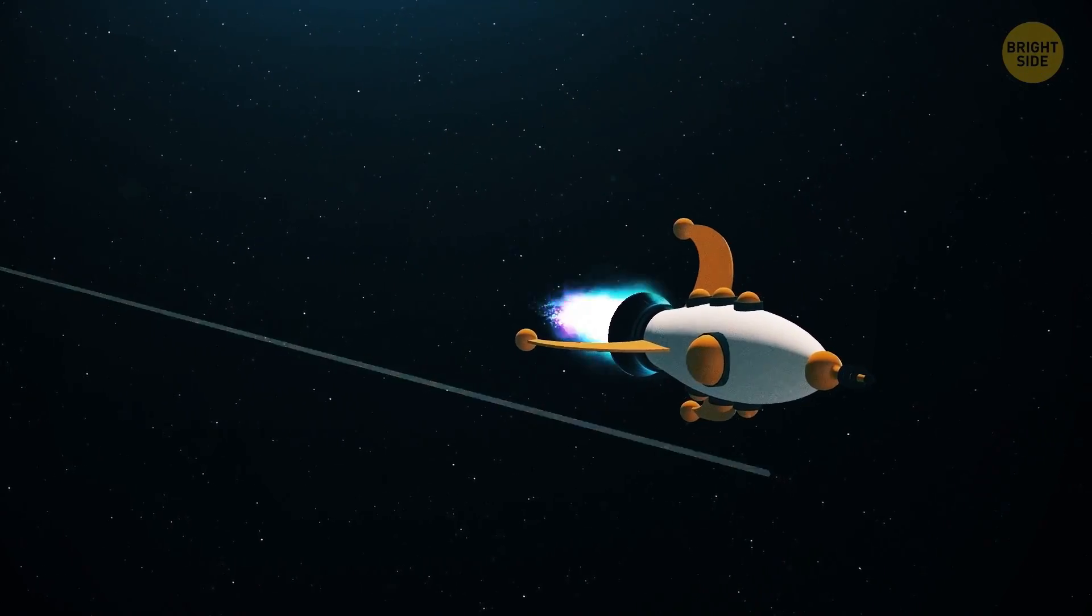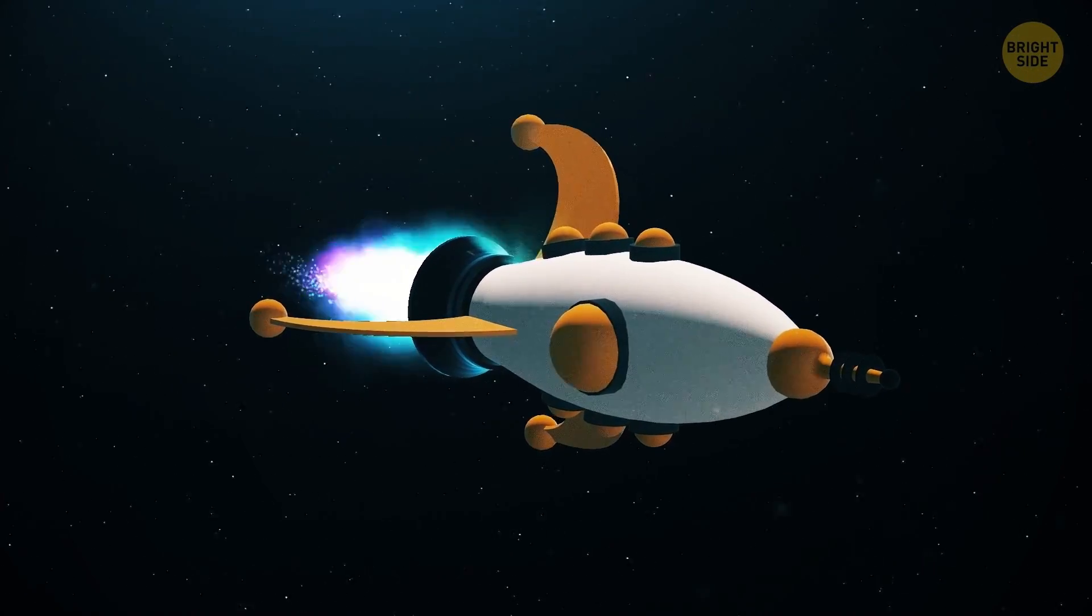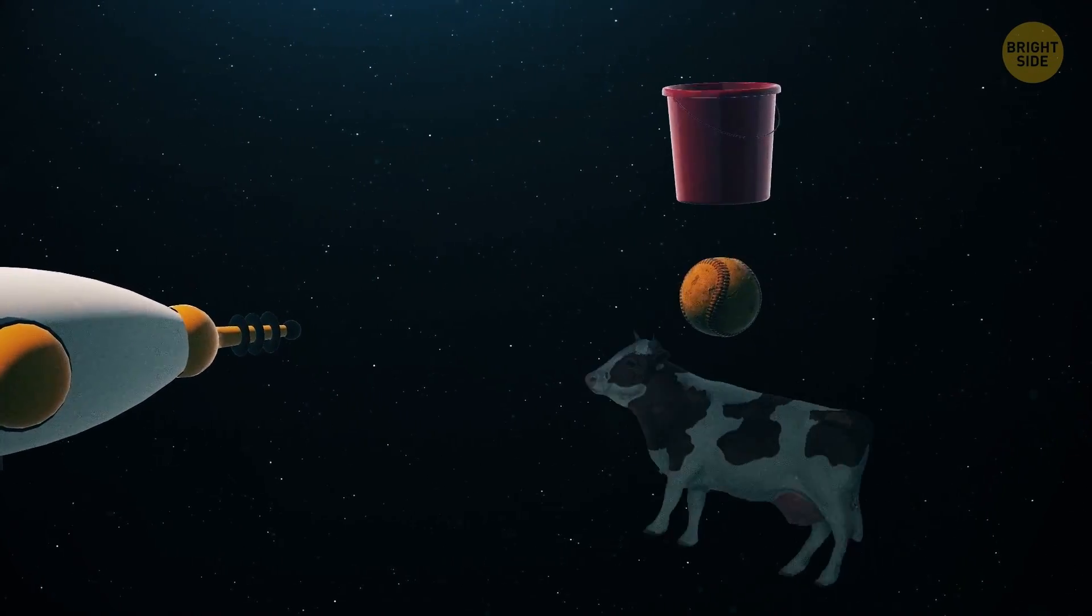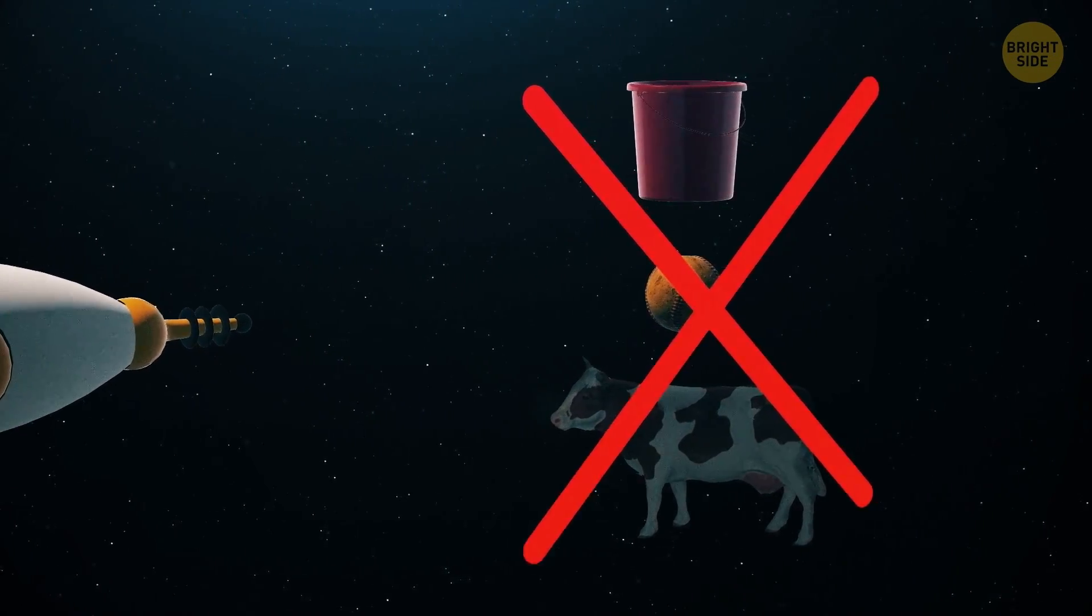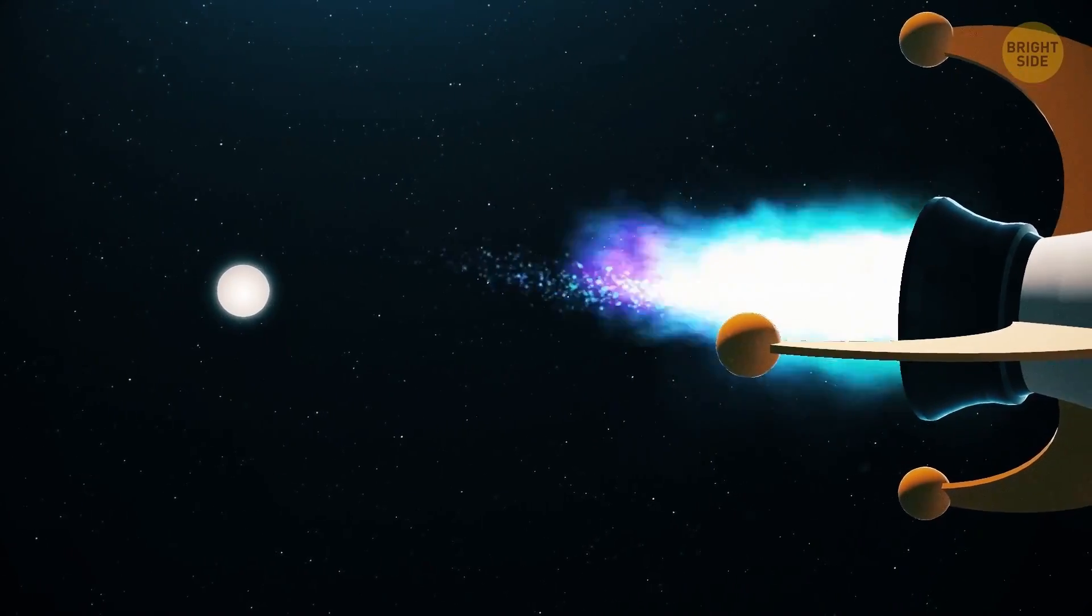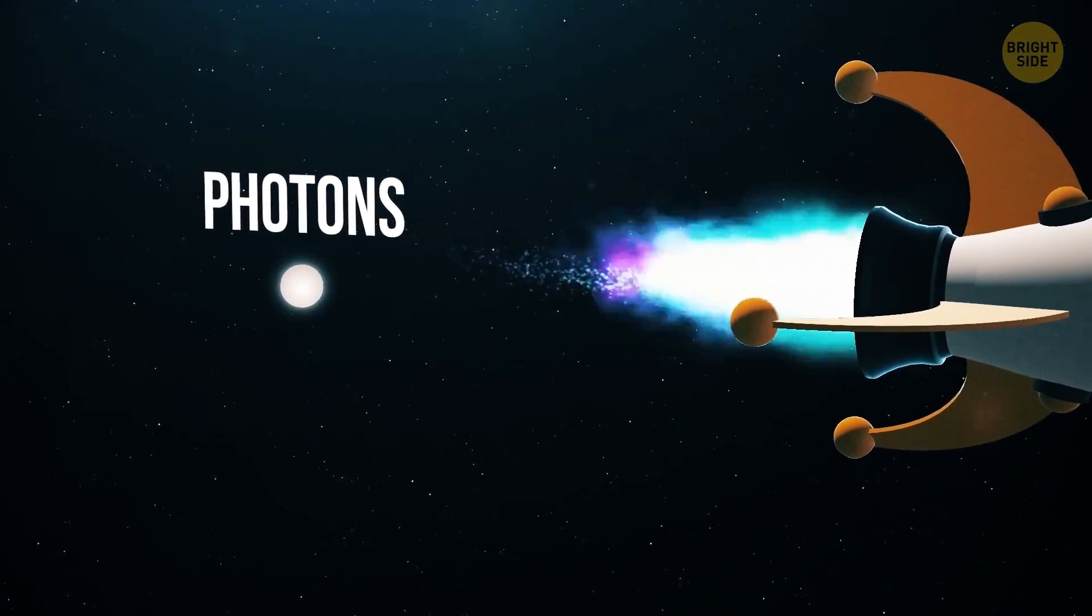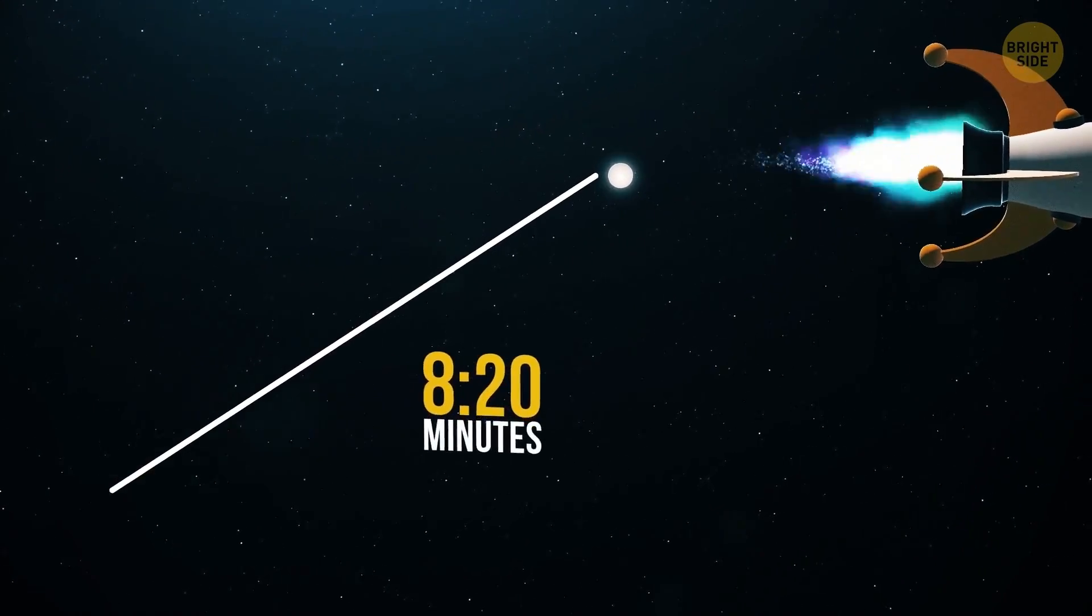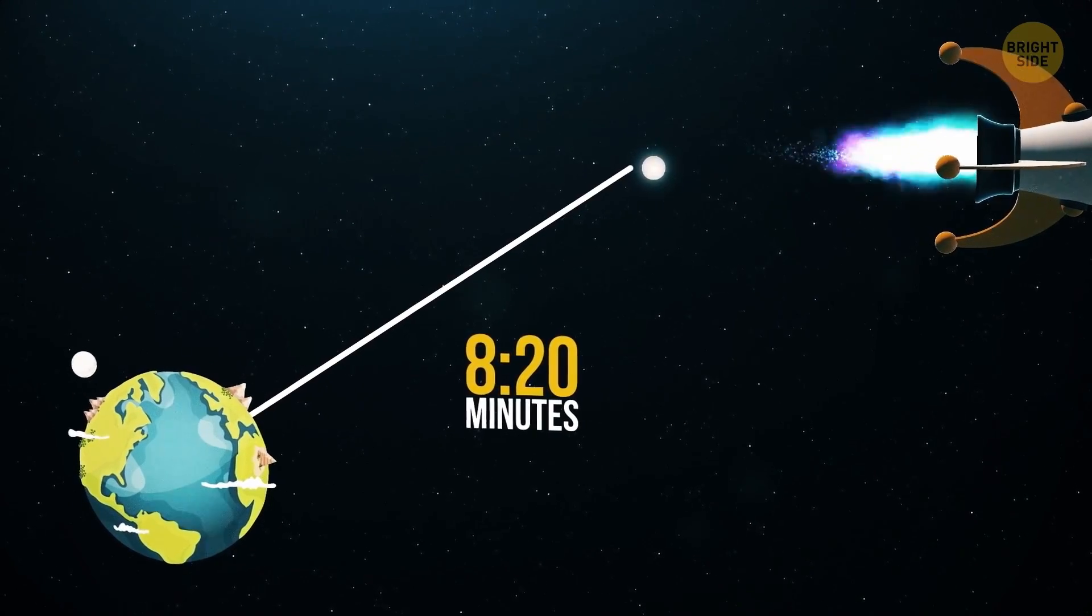So, this is the speed limit for everything in the universe. And what is most interesting? No object that has mass, according to the laws of physics, can move at such a speed. Particles of light, or photons, do not have mass. So, they are the only things that can. Photons only need 8 minutes and 20 seconds to reach our planet from the sun.